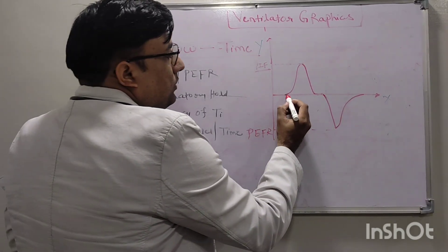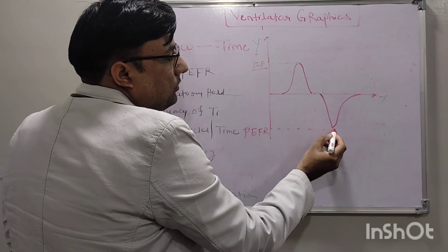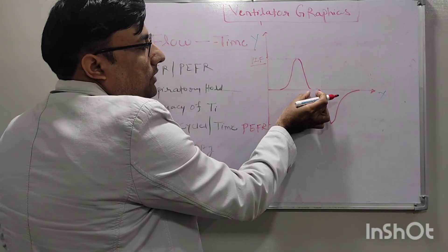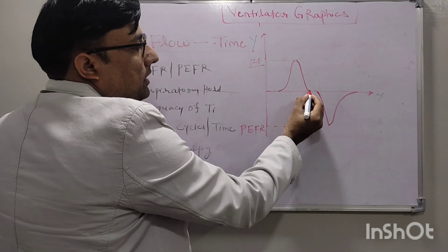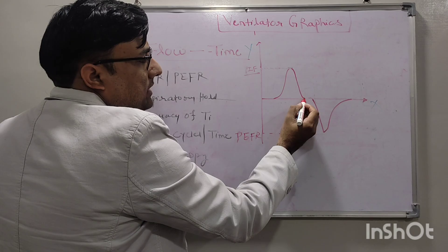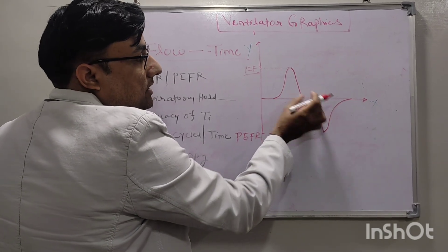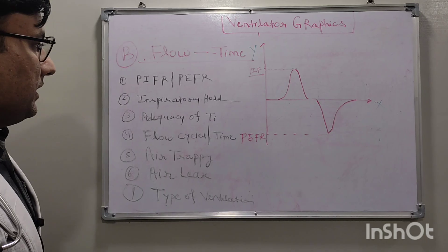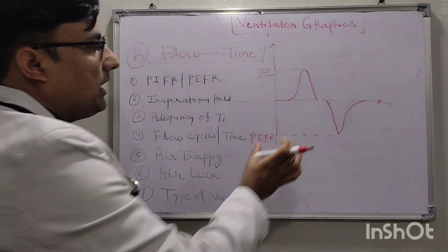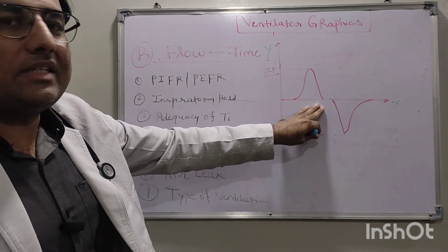Next, what is the inspiratory hold? After the inspiratory flow comes to the baseline, it does not go directly to expiration — there will be some inspiratory hold. During this time, there is no airflow. Inspiration has ended, but expiration has not yet started. This is the inspiratory hold. If this period is long, it means the inspiratory hold is long and the set I-time is excessive — we can decrease the I-time.